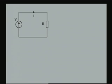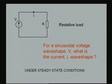First consider the following circuit. It is a simple circuit with a voltage source of an arbitrary wave shape and also consists of a resistance — it is a resistive load — and as shown in the diagram there is a current I also flowing through it. Now let me ask a question: for a sinusoidal voltage wave shape, how will the source voltage wave shape and correspondingly the current wave shape look like under steady state conditions?